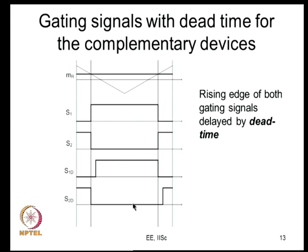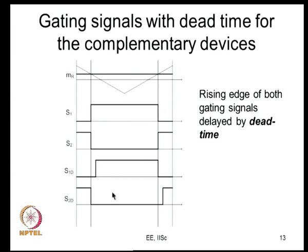S1d and S2d are not exactly complementary. In some intervals they are complementary, but in certain intervals both are equal to 0. After introducing dead time you have S1d=1, S2d=0 or S1d=0, S2d=1, and also S1d=0, S2d=0. You will never have S1d=1 and S2d=1 simultaneously, because that would mean a dead short of the DC bus - which is precisely the reason for introducing the delay.